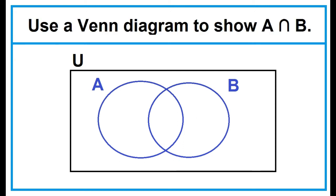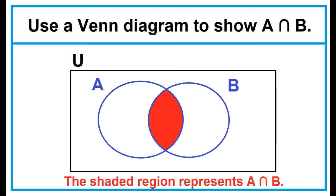Use a Venn diagram to show A intersection B. Shade the region where the two circles overlap. The shaded region represents A intersection B.